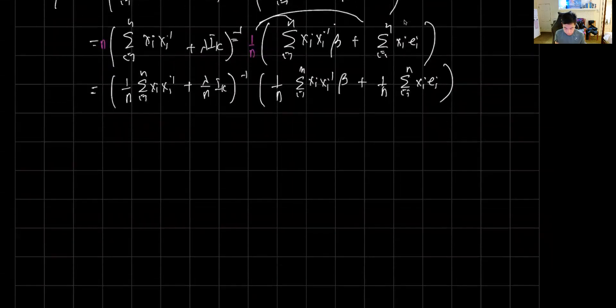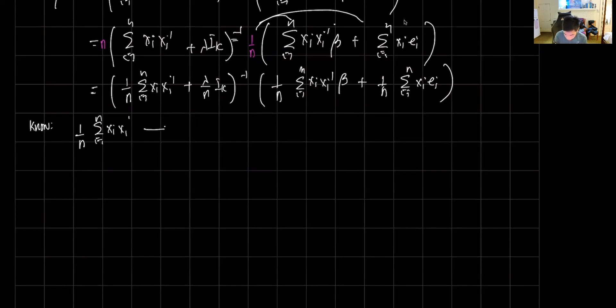Then again from here, we're gonna try to appeal to a couple of facts that we know. We know that 1 over n sum i equals 1 to n x i x i prime converges in probability to Q_xx as n approaches infinity. Then we also know that 1 over n sum i equals 1 to n x sub i e i converges in probability to the expected value of x e, which we know is equal to 0 as n approaches infinity.